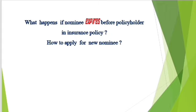Do you know what happens if the nominee expires before the policyholder in an insurance policy? What will happen to the policy benefits? Who is eligible to claim the benefits? Here, the nominee is the sole owner of the policy benefits when the policyholder or investor is no more. If the nominee themselves expires before the policyholder, and the policyholder expires immediately before changing the nominee or nominating a new person, a complication arises.